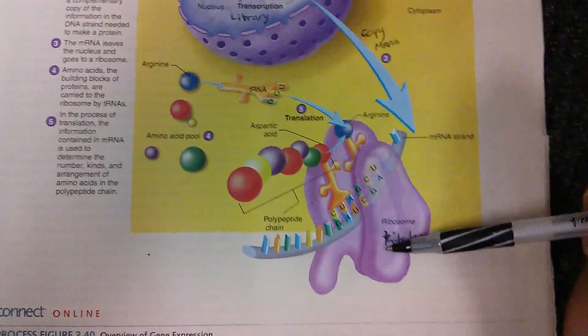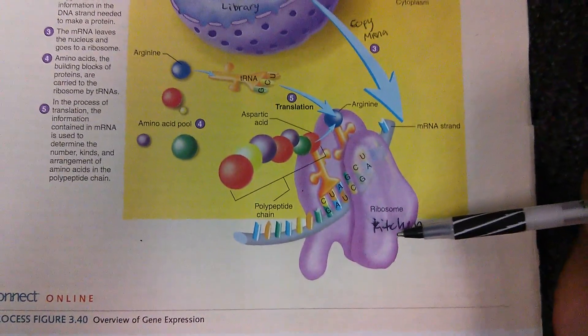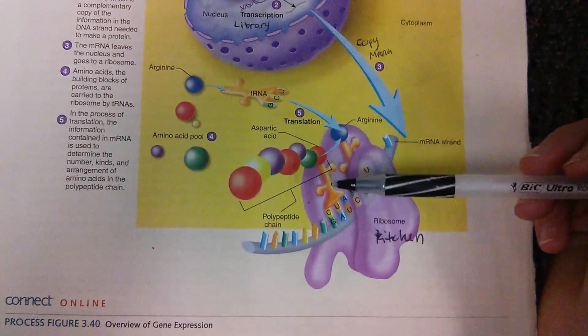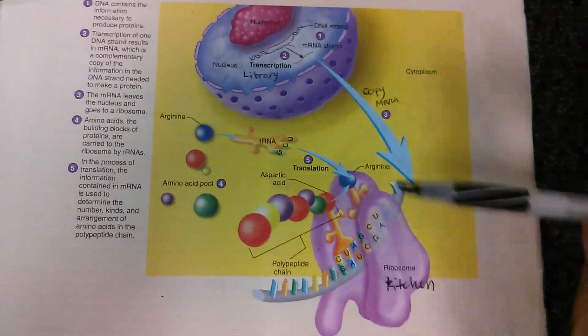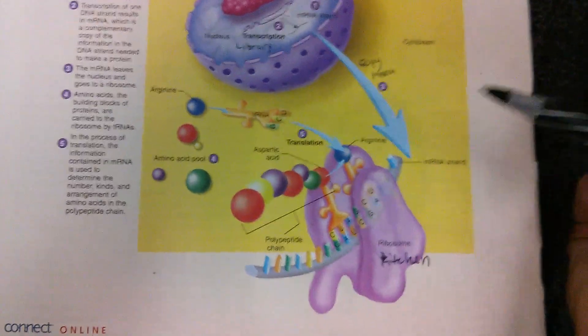Now from there it goes to the ribosome, which I have called the kitchen, because this is where protein synthesis happens, or where you're building the protein. And in the case of the analogy, this is where the cake is going to be built or cooked.